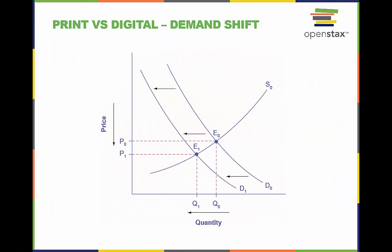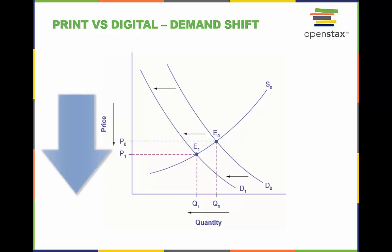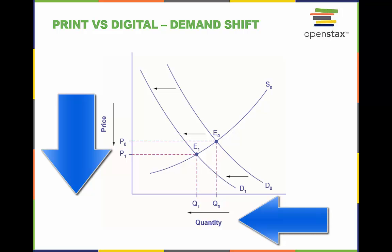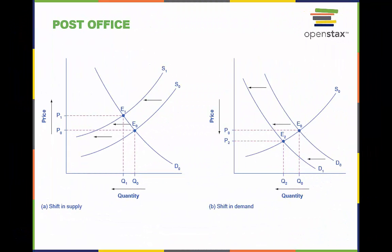Now let's look at a shift in demand. This demand shift is the result of a change in taste from print news sources to digital news sources, resulting in a leftward shift in demand for print news sources. If you go through the four-step process, you see that the result is a decrease in both equilibrium price and equilibrium quantity.